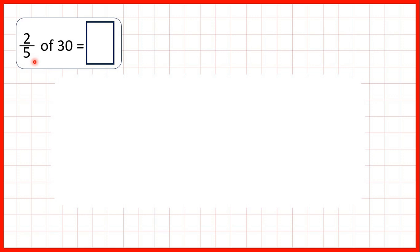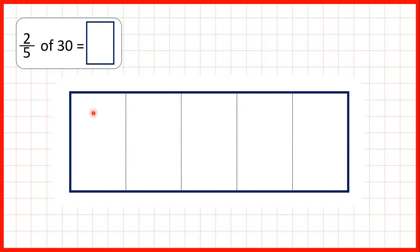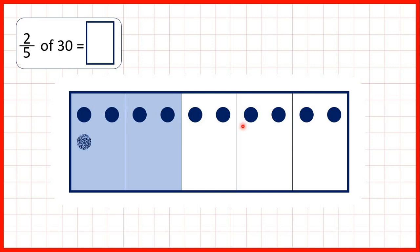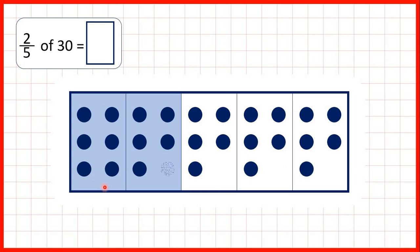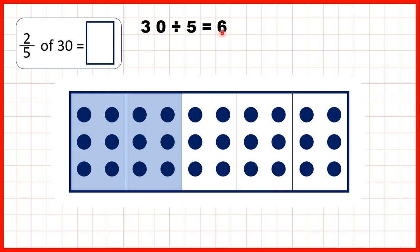So let's think back to the first question. We needed to find 2 fifths of 30. For 2 fifths, we can show a fraction bar divided into 5 parts, and we're finding 2 fifths, so we can colour in 2 of those parts. If we share out 30 counters between our fifths, you can see that we have 6 counters in each fifth, and that's why we divided by the denominator. So 30 divided by 5 told us there were 6 counters in each fifth, but we were finding 2 fifths, so we needed to multiply that 6 by 2 to get 12. We have a total of 12 counters in the shaded area of our fraction bar, so that's our answer.